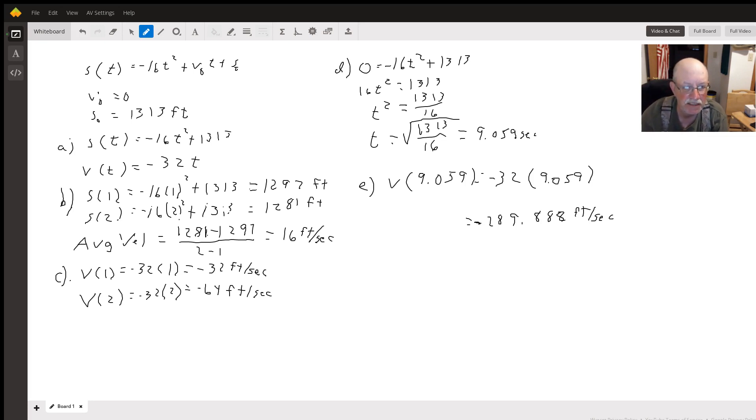Well, since you're just dropping the ball, your initial velocity v₀ is going to be zero, and since we're dropping it from 1313 feet, s₀ is going to equal 1313.